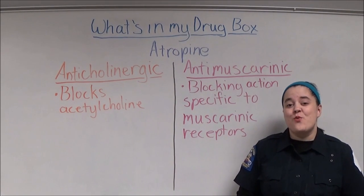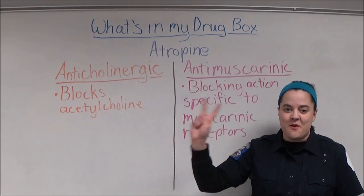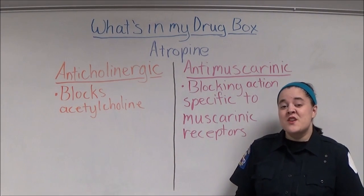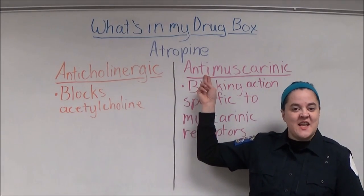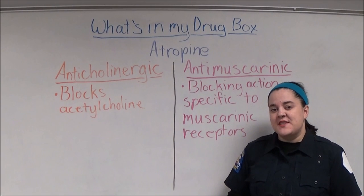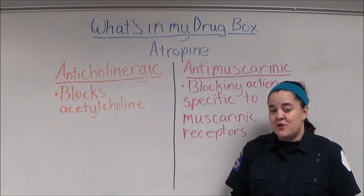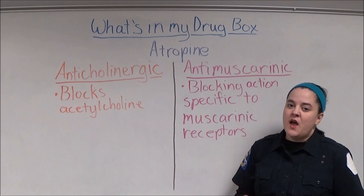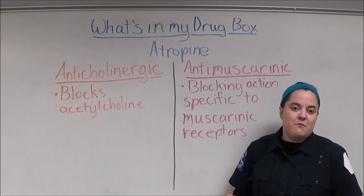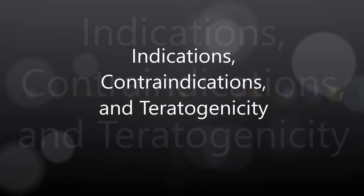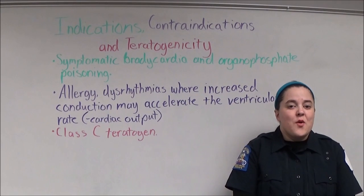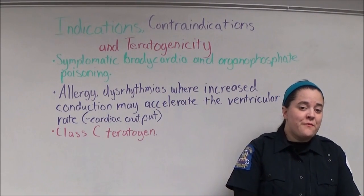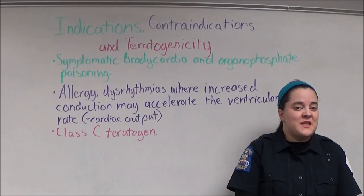Hello everybody and welcome to 'What's in My Drug Box' episode number two. Today we're going to talk about atropine. Atropine is both an anticholinergic and an antimuscarinic. Anticholinergics block acetylcholine; antimuscarinics also block acetylcholine, but the blocking action is specific to the muscarinic receptors only. Bradycardia is defined as a heart rate that is less than 60 beats per minute.